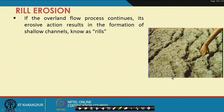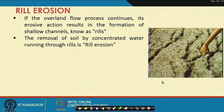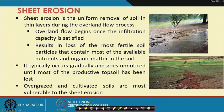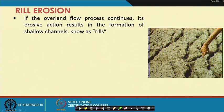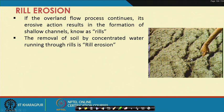The next type is rill erosion. If the overland flow process continues, its erosive action results in the formation of shallow channels known as rills. The sheet flow takes away soil particles and creates patches; if allowed to continue, it results in the formation of small rivulets or channels called rills. Once rills are formed, water flows in a concentrated stream through them, causing further soil erosion — this is rill erosion, the third level of water erosion.